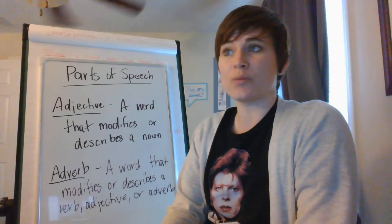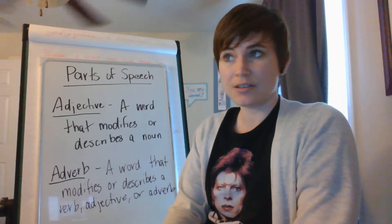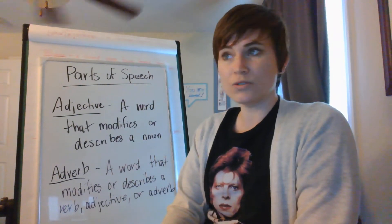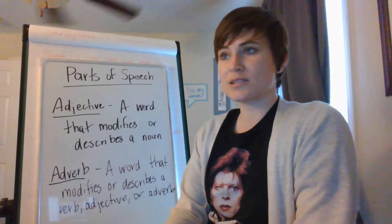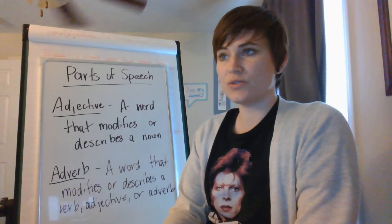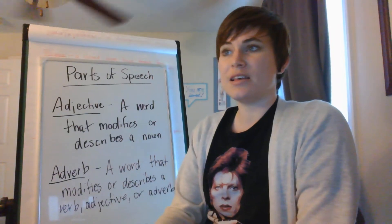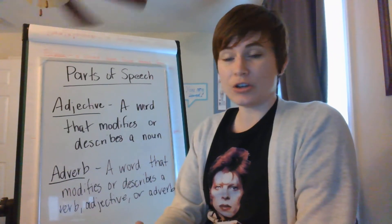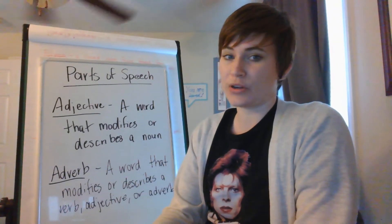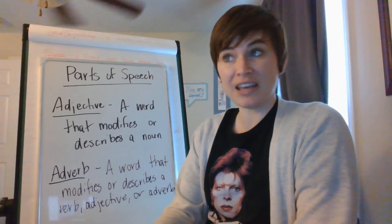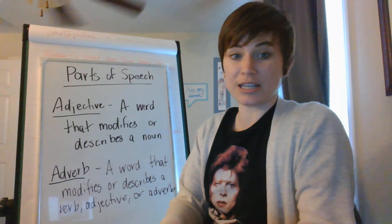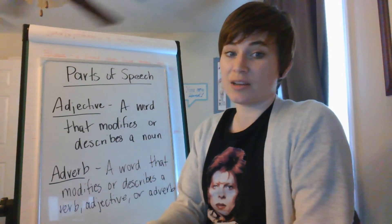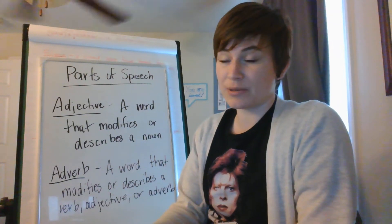Some examples are pretty, old, blue, smart. So you could say, the pretty girl was wearing a pink dress. So pretty and pink both describe nouns.